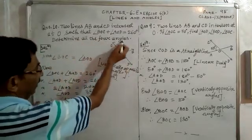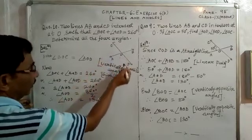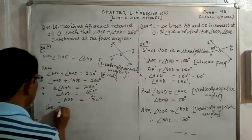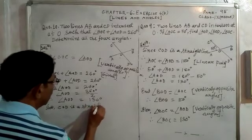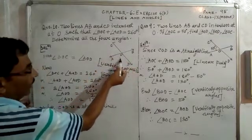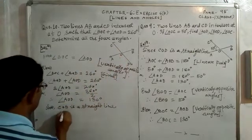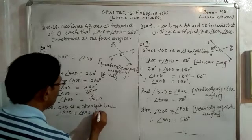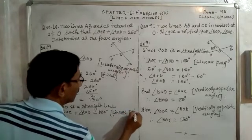We need to find all four angles. We have got AOD as 130 degrees. Now since COD is a straight line, angle AOC and angle AOD are a linear pair. So angle AOC plus angle AOD equals 180 degrees. Substituting: angle AOC plus 130 degrees equals 180 degrees.